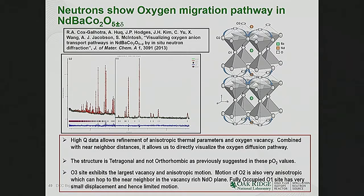For example, here is a neodymium barium cobalt oxide double perovskite structure. Because neutrons are so sensitive to oxygen, we can refine the oxygen occupancy and say here is where your vacancies are. You need vacancies for things to move. Not only can we say where the vacancies are, these things have an anisotropic thermal parameter that points toward dynamics. I started out saying we primarily do statics, but you can infer dynamics — because the thermal parameter is elongated in a certain direction, it makes sense that the oxygens are moving in that path. You can have a reaction mechanism based on this type of analysis.